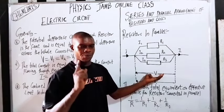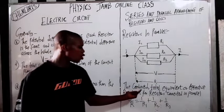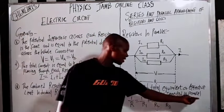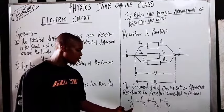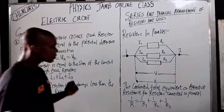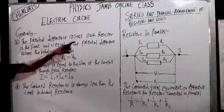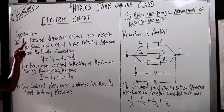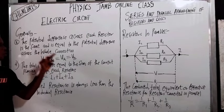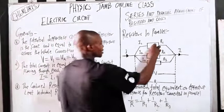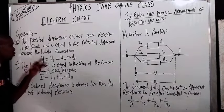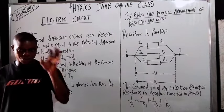The combined total equivalent or effective resistance for resistors connected in parallel is: one over R equals one over R1 plus one over R2 plus one over R3. The potential difference across each resistor is the same and is equal to the potential difference across the whole parallel connection. That means R1, R2, and R3 all have the same voltage. So V equals V1 equals V2 equals V3.